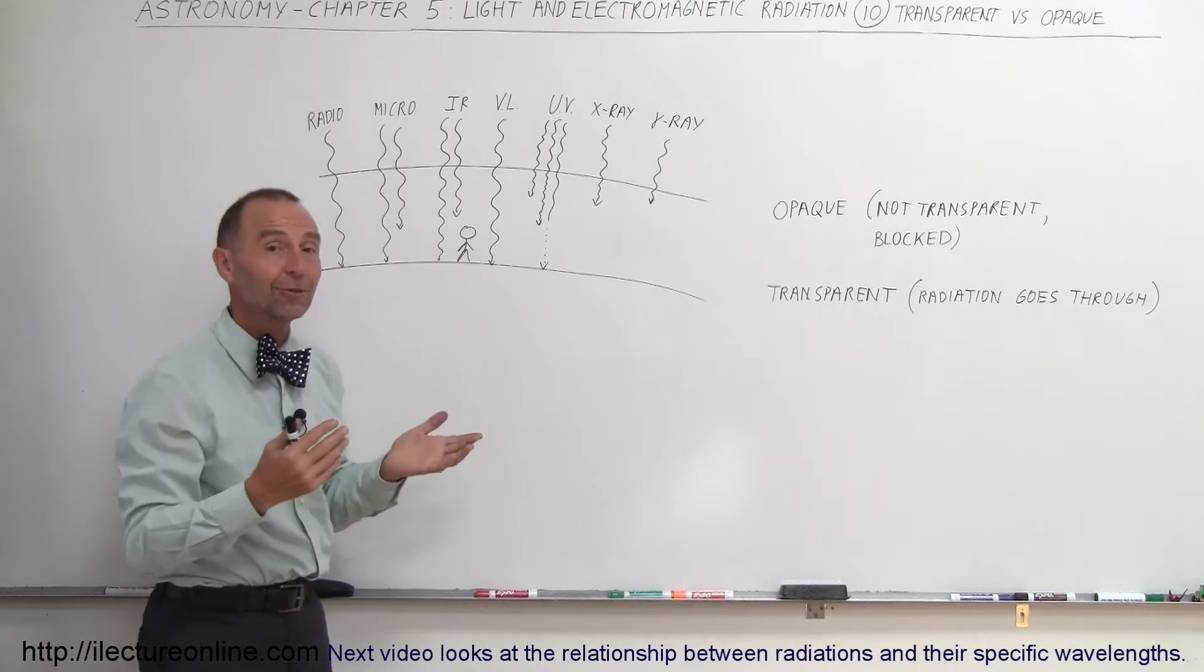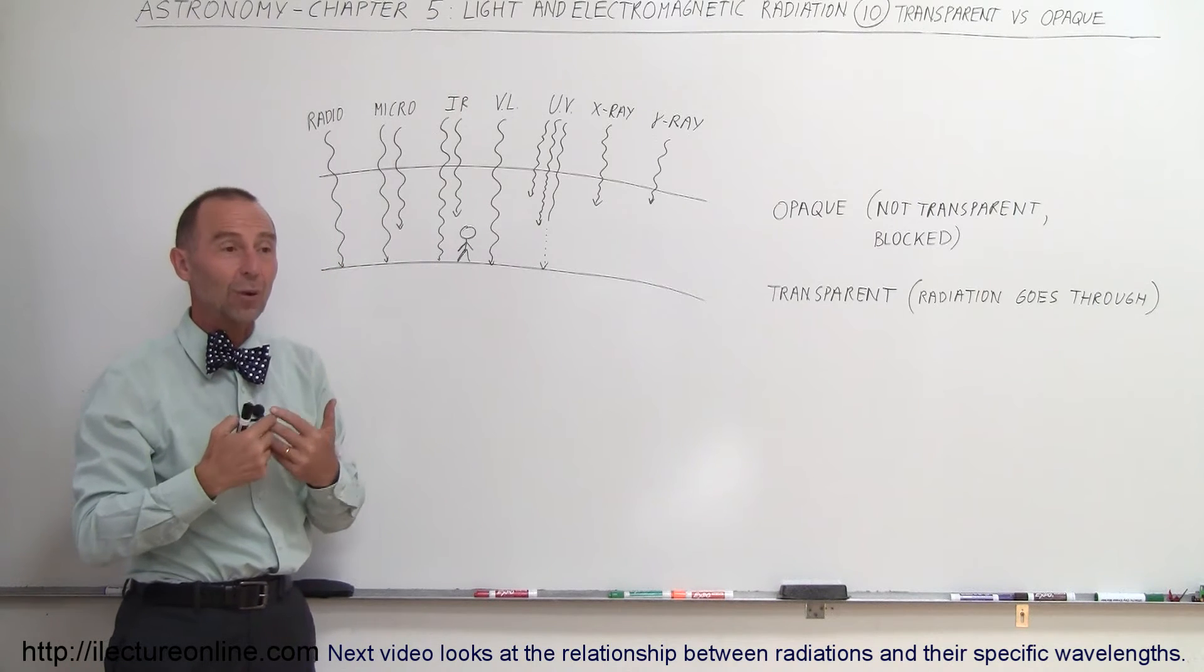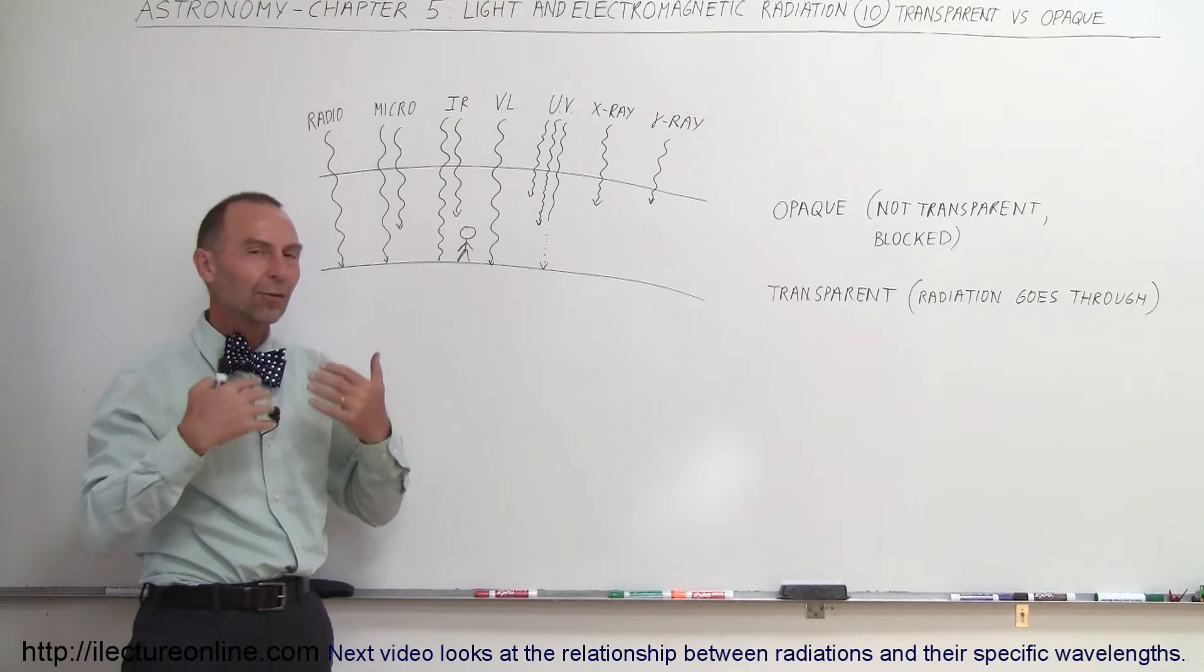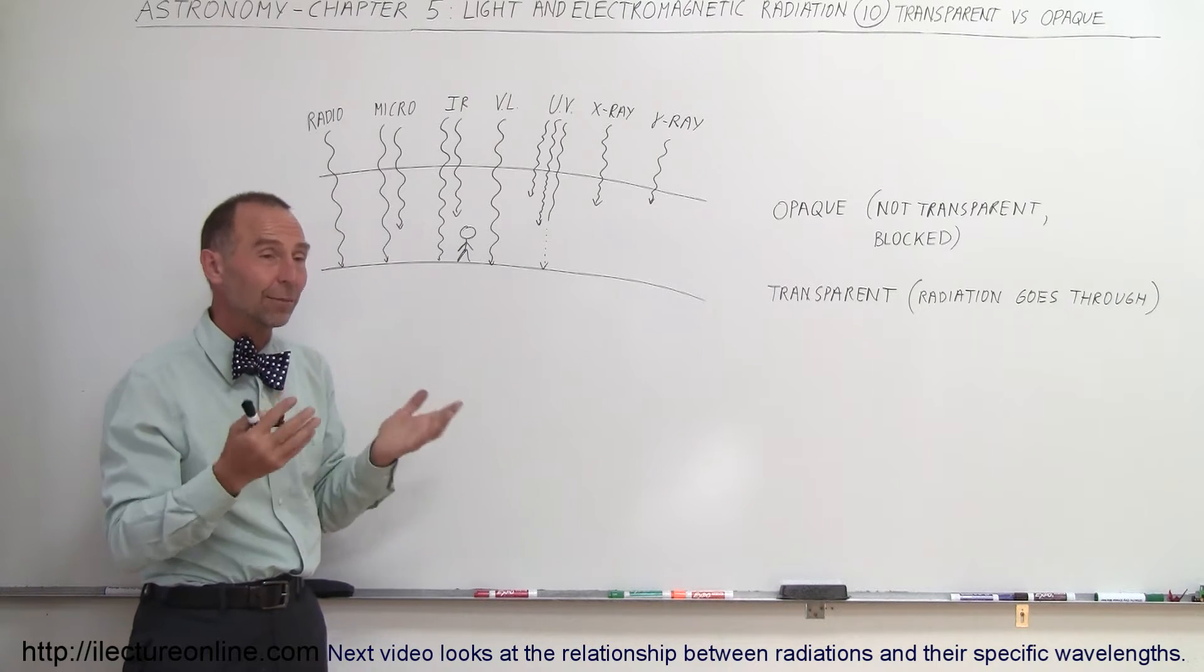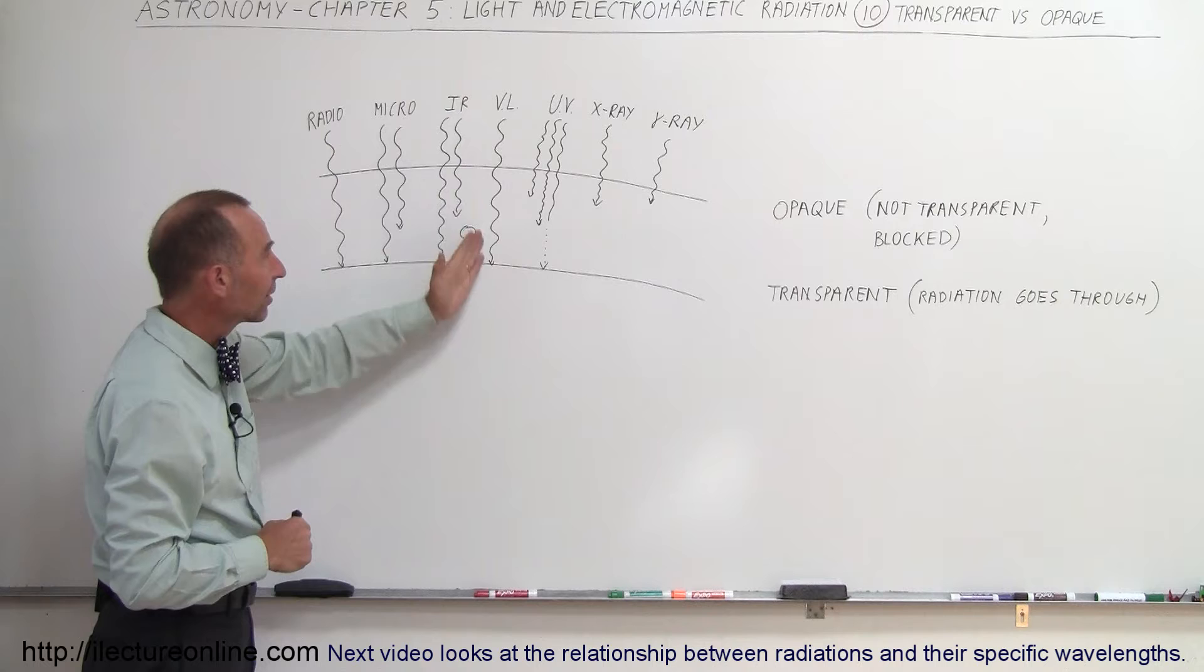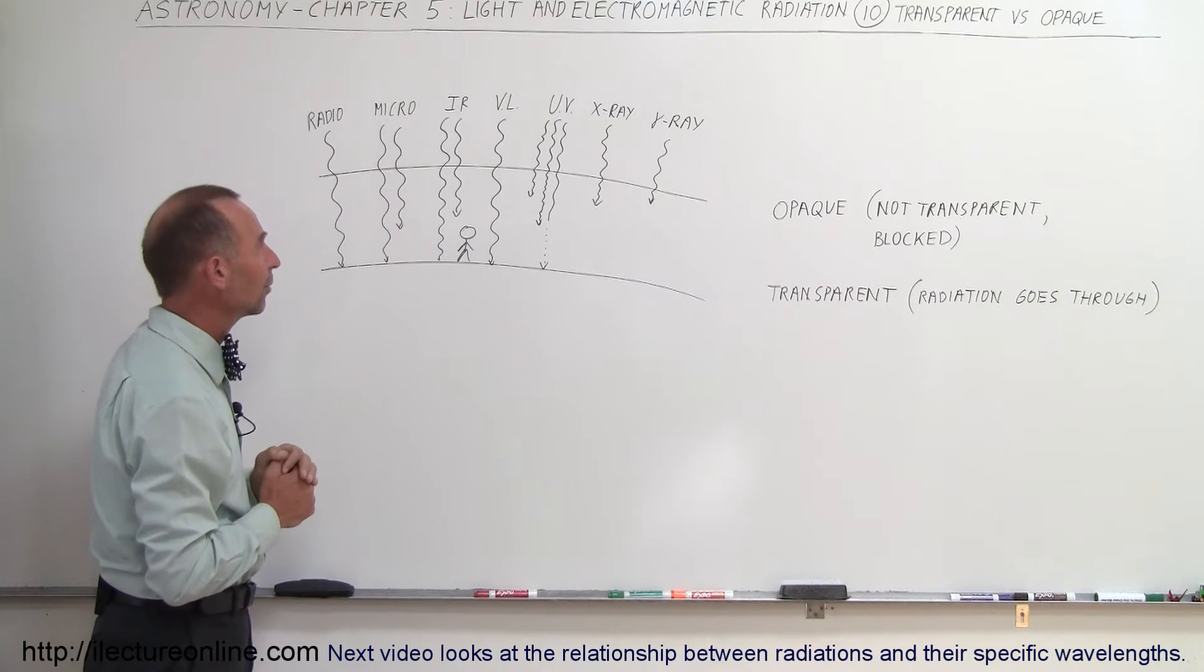Visible light, luckily for us, makes it through the atmosphere just fine. And that's why we can see everything in visible light. That's why our eyes are probably made for visible light, it makes it perfect for us to be able to see. And so no problems getting light from the sun through our atmosphere.